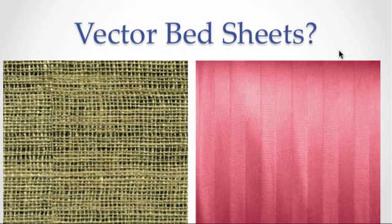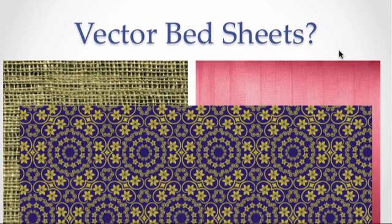Using our bedsheets example: remember that coarse threads from a beginning weaver would yield something like burlap, and fine threads from a master weaver would yield 1000 thread count Egyptian cotton. Well, in vector graphics, we simply create the instruction that tells the computer to make a rectangle the size of the bedsheet and fill it with the color of the sheet. In vector graphics programs like Adobe Illustrator, we can even define the fill to be a pattern, and voila — vector bedsheets.